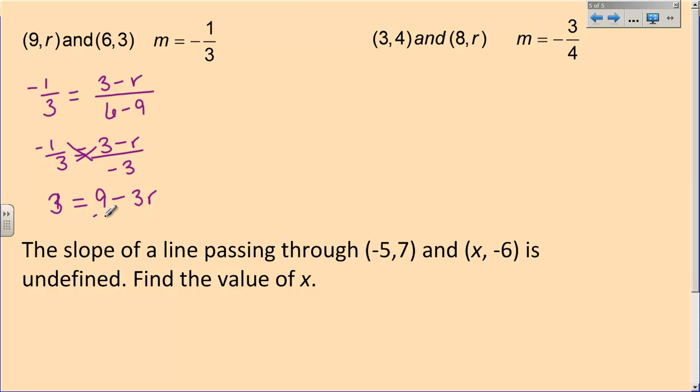And I start this equation by subtracting 9. So 3 minus 9 is negative 6 equals negative 3R. And I will divide both sides by negative 3. And so that I get that R equals 2. That means this part of the point right there is 2. And so that's what needs to go here to make the slope between these two points negative one-third.